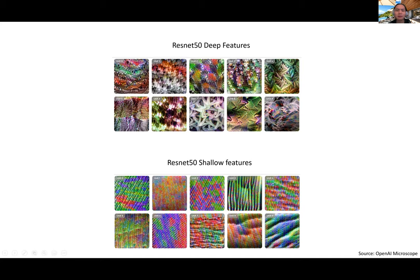Different neurons, after pre-training, respond to different signals. In the earlier layers they respond to different frequency or edge signals in the image, whereas in the deeper layers they correspond to much more complicated patterns like leaves or starfish. This contrasts with what you see in a randomly initialized ResNet, where the features correspond to just random images. These images concretely demonstrate that feature learning has occurred and that learned features are very important for downstream applications.